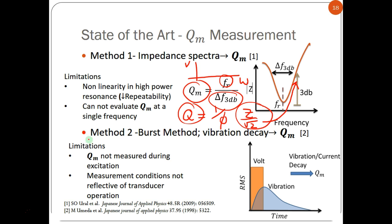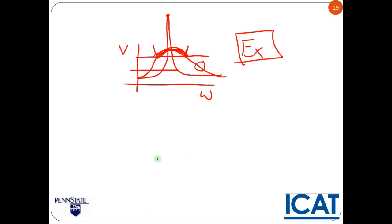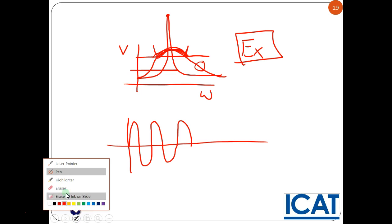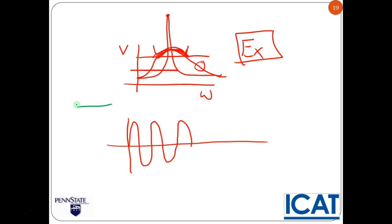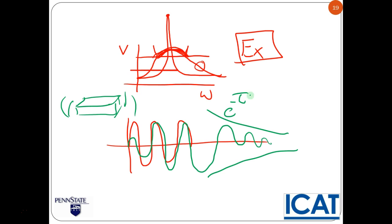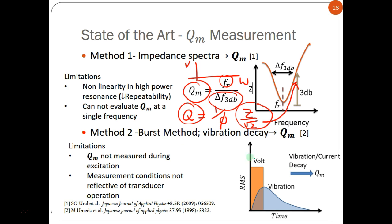The second method is to use the burst method, where we excite the ceramic. We excite the ceramic using a burst signal at its resonance frequency. So we apply this type of resonance frequency. The ceramic is going to also vibrate. It'll build up its vibration slowly at the same frequency as the excitation. And then the vibration will decay in an exponential envelope, e to the negative time constant tau, something like that. And that tau, the time constant, the rate of decay of the vibration after its excitation, will tell you the quality factor as well. So these are the two methods to measure the quality factor.